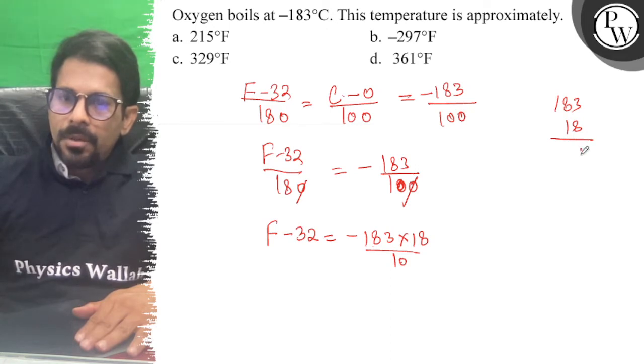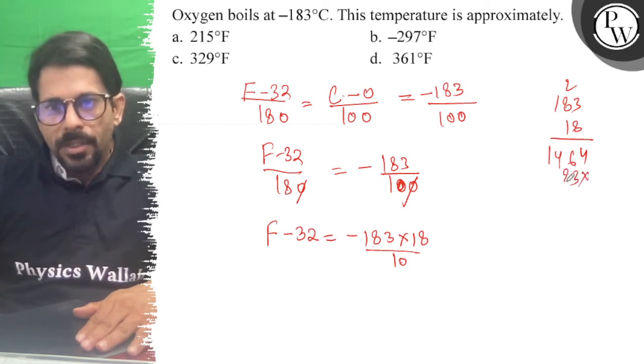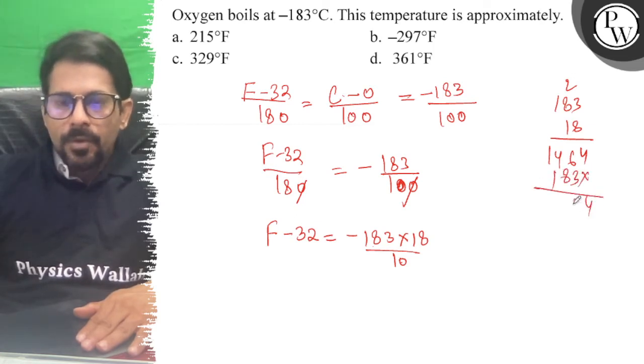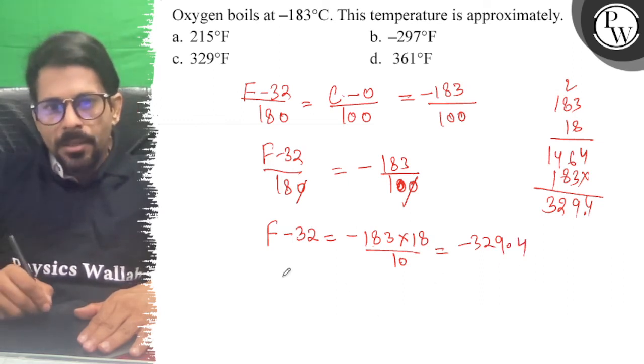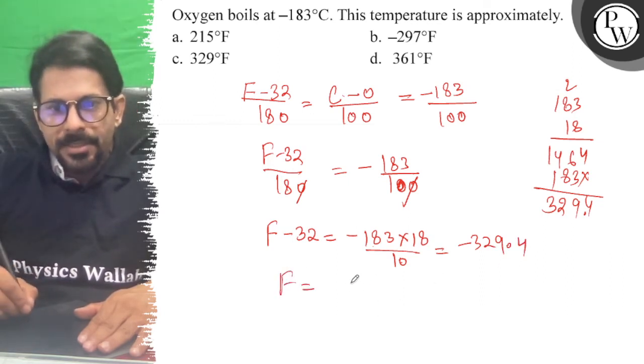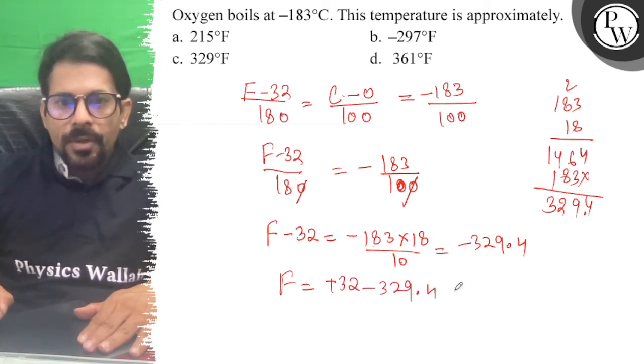4 carrying 2, 6 carrying 6... 1464, 183, 3294. So 183 times 18 equals 3294. Divided by 10 gives 329.4, so minus 329.4. Therefore F equals 32 minus 329.4 degrees Fahrenheit.